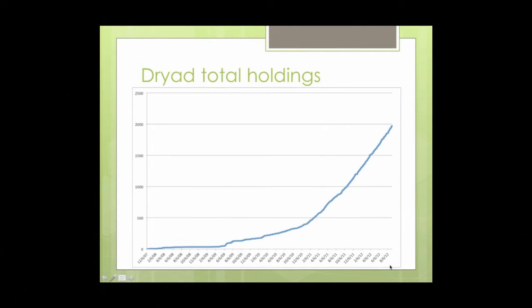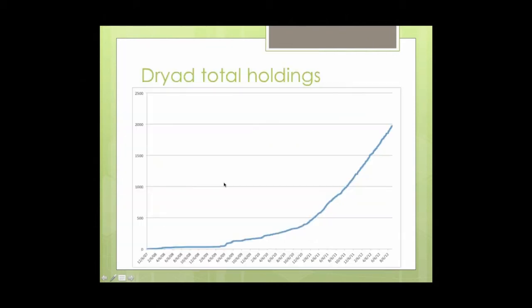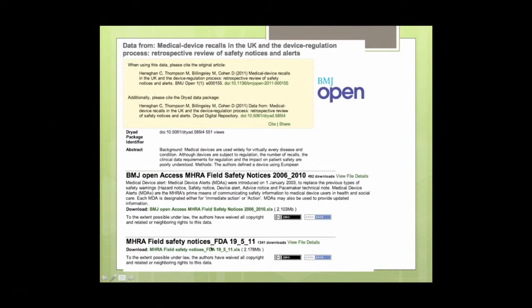Here's our growth curve — we've doubled in the past year and are now a little past the 2,000 mark. Here's an example of what an actual data deposit looks like in the Dryad system. The suggested citation information appears at the top, and farther down there are the individual files that are part of this data deposit with links to download those files.